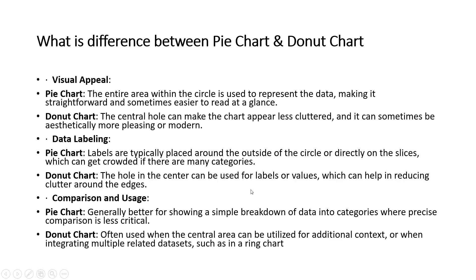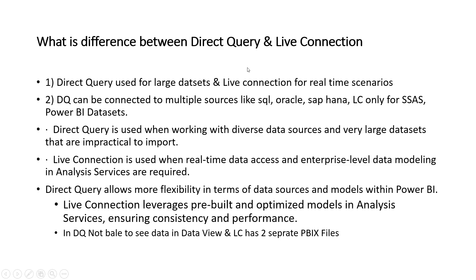Moving to the second difference: direct query vs live connection. In interviews, the trending question in 2024-25 is the difference between direct query and live connection, not just import mode vs direct query. Direct query is used for large datasets — for example, 10 to 15 million rows or more. In a star schema, only the fact table may be fetched with direct query. For huge datasets we go with direct query.